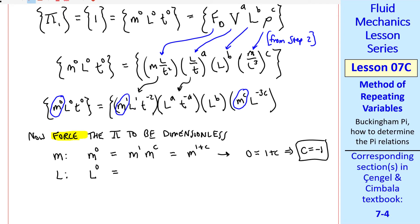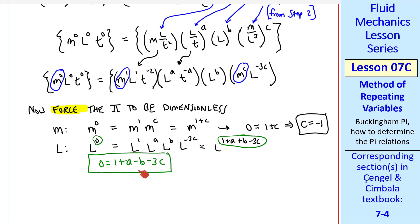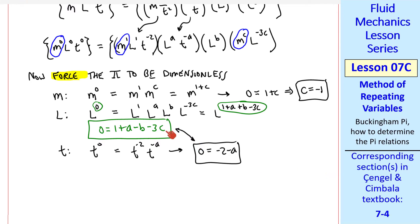We do the same with the other primary dimensions. For l, we get l to the one from here, l to the a from here, l to the b from here, and l to the negative three c from here. We write all of them under one exponent, and then equate exponents on the right and left, which gives us this intermediate equation. We know c, but we have two unknowns here, a and b, so we can't solve this yet. We repeat for t. Skipping a little bit of algebra, we write zero equals negative two minus a. You can see this here just by looking at exponents. Zero equals negative two minus a. There are no other t's in the equation. Sometimes we end up with two simultaneous equations or even three simultaneous equations to solve. Here, we're fortunate that we can solve for a and plug that in here to get b.